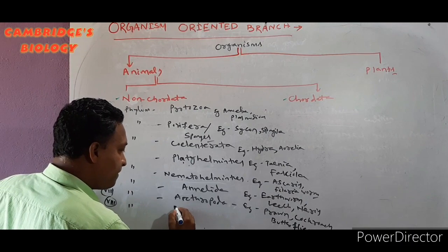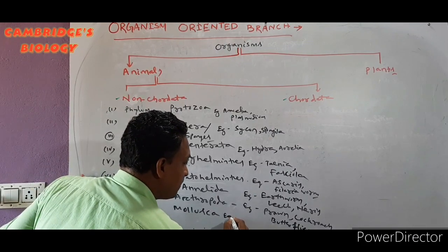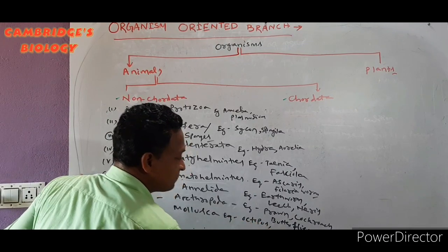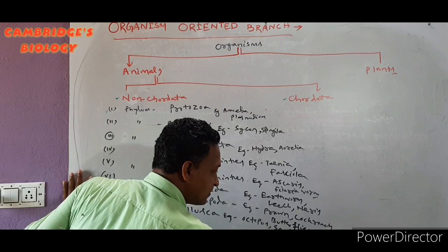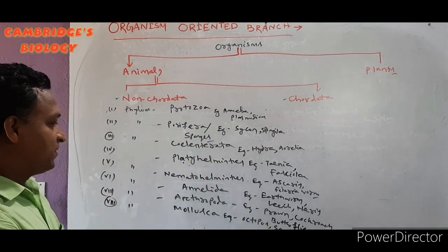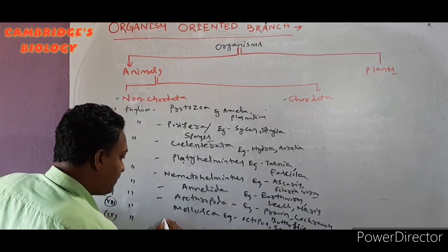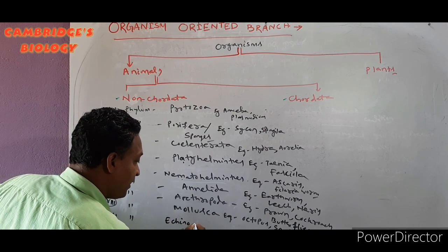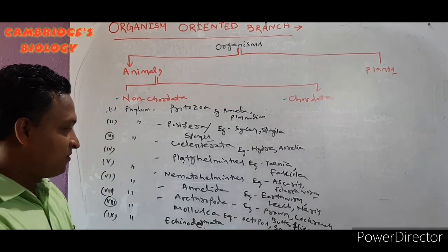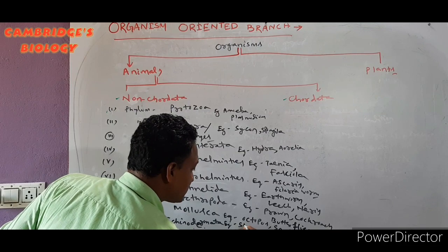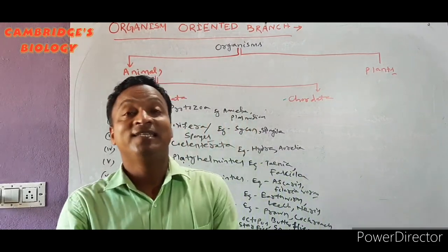The next phylum is Mollusca — examples: Octopus and Snail. The next phylum is Echinodermata — examples: Starfish, Sea Cucumber, and Sea Urchin.